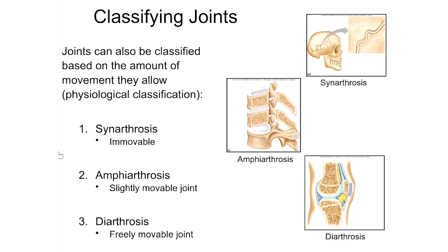You might think the vertebral column seems very movable — you can bend it forward, backward, and side to side. That's because there are many individual amphiarthrotic joints, each moving just slightly. When you combine the slight movement of each amphiarthrotic joint and multiply that by all the vertebrae making up the vertebral column, you get a much larger overall range of motion.